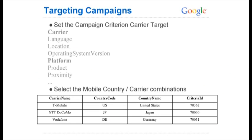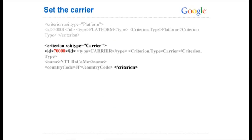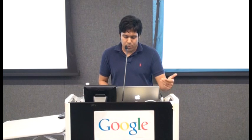Another important target is the carrier. That's something that existed in previous versions and has changed in the new service. We have different carrier name and country code combinations. For example, to target NTT Docomo in Japan, the criteria ID is 70,000. Similar to the platform criteria type, we set another criterion with type carrier and ID 70,000. The grayed-out text is optional on input and returned in the response.